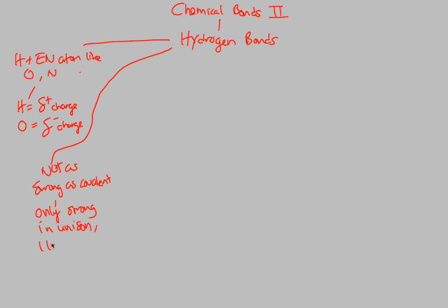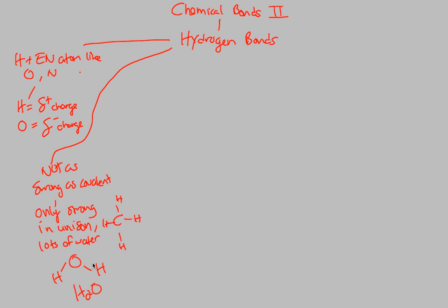They're only strong in unison. If we have lots of water molecules, we're going to have a very strong overall force because there will be tons of these hydrogen bonds acting together. Whereas a covalent bond — something like carbon bonded to hydrogen four times — all you need is one of those and you have a strong covalent bond. With hydrogen and oxygen giving us water, we need many of them.